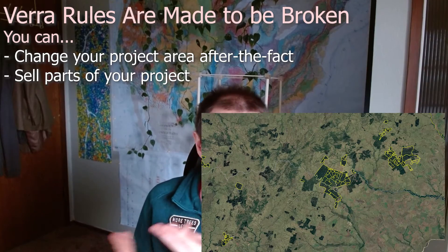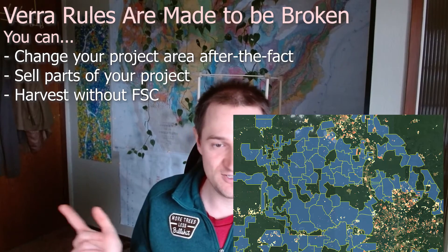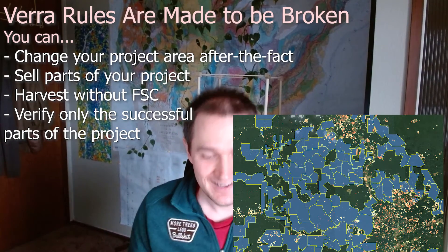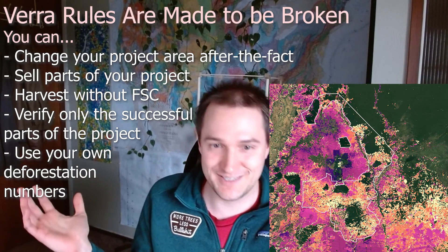I want to back up a bit because one could argue maybe VERA is turning over a new leaf and things are going to get better. One of the reasons I'm so cynical is that none of the other rules VERA has in place are currently enforced. VERA allows you to change your project area, sell your land after you've committed to protecting it, harvest trees without FSC certification, verify only bits of the project, and say how much deforestation has happened inside the project even if it's completely opposite to everybody else's claims. VERA is already letting people violate its rules on a regular basis — is a new set of rules going to change anything? I could go into more nuance, like the buffer system, but honestly I've only ever seen it used twice, and both cases were basically numbers done wrong rather than a genuine reversal.